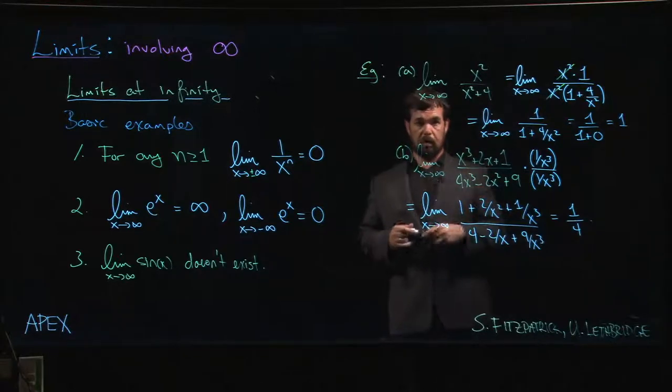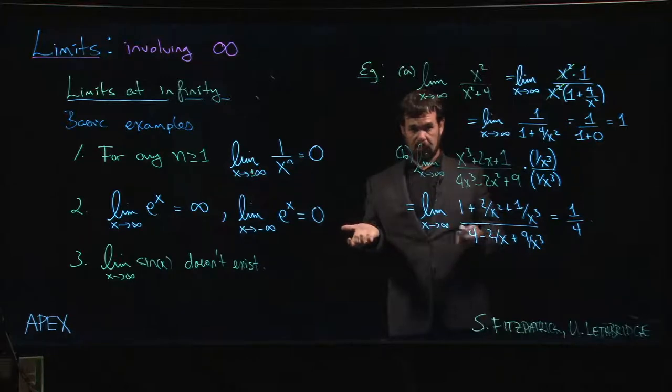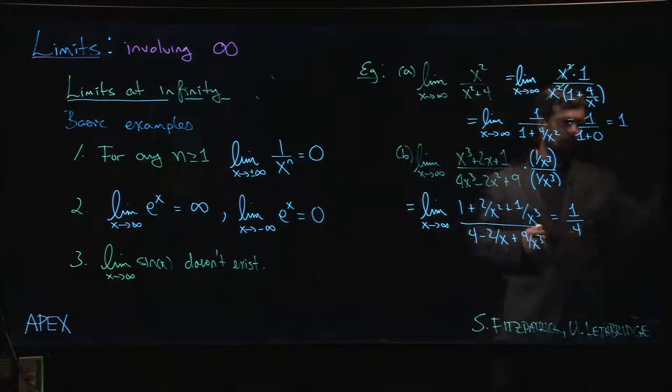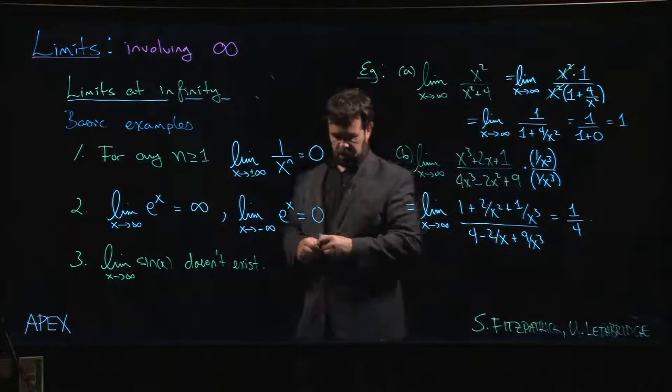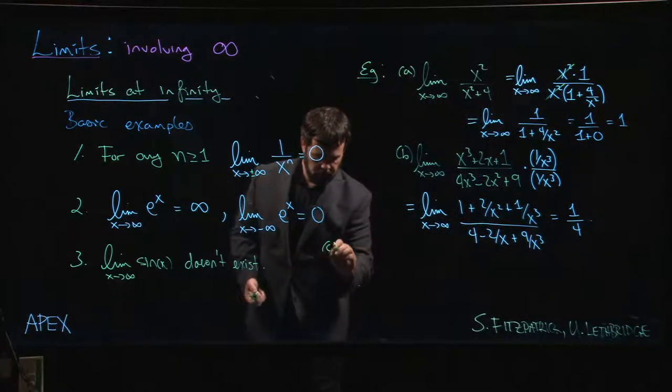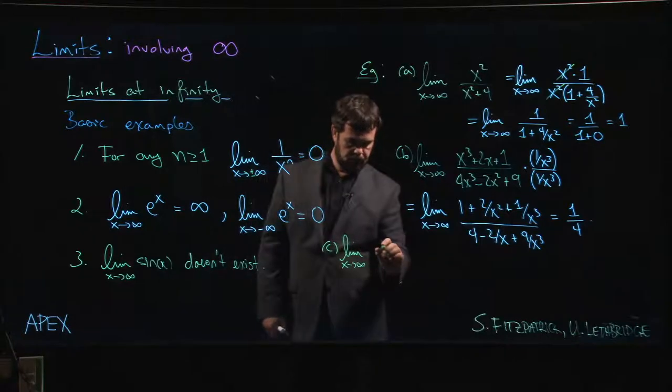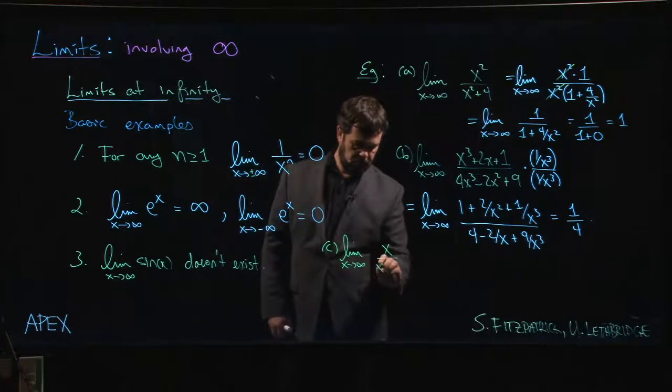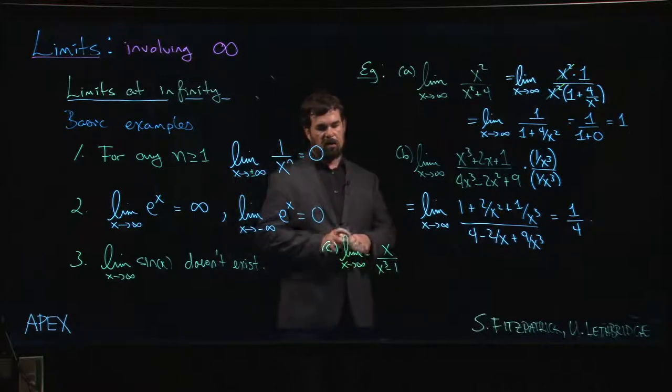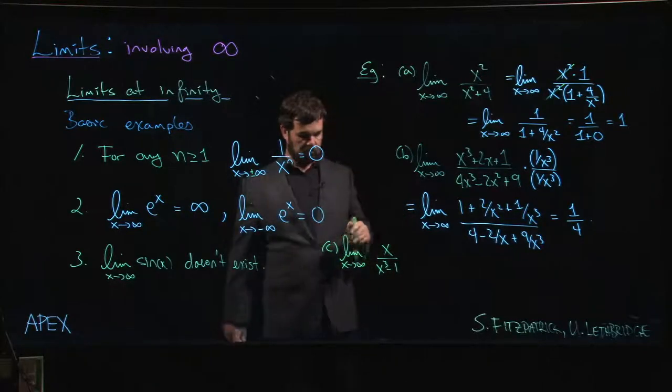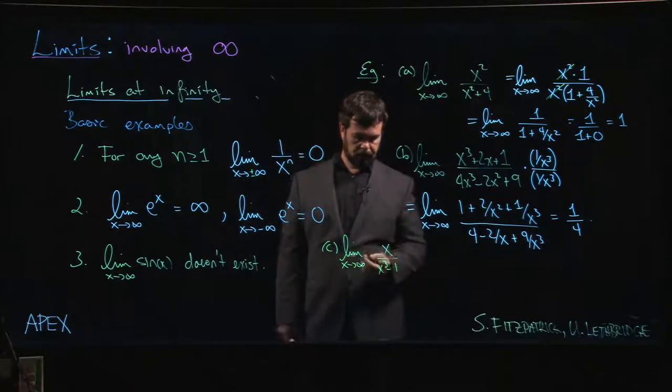Now in these two examples we had the same degree polynomial top and bottom. That's not always going to be the case. In a lot of cases we're going to have differing degrees, either top or bottom. Let's look at one more quick example. Let's say we have something like the limit as x goes to infinity of x over x cubed minus one. In this case, the degree is greater in the denominator.